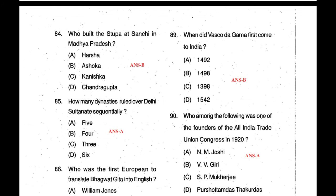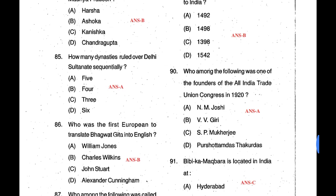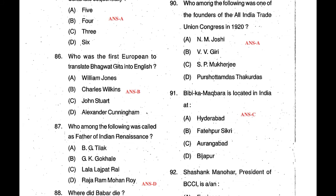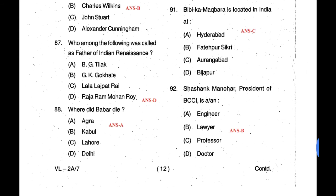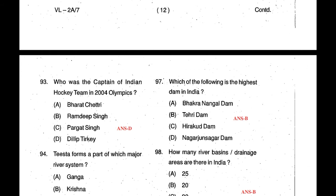Question 88: Where did Babur die? Babur died at Agra — correct answer is A. Question 89: When did Vasco da Gama come to India? Vasco da Gama came to India in 1498 — correct answer is B. He reached the Zamorin coast, in Calicut in Kerala, first reaching the western coast. Question 90: Who among the following was one of the founders of the All India Trade Union Congress in 1920? Correct answer is N.M. Joshi — answer is A. Question 91: Bibi Ka Maqbara is located in India at Aurangabad — correct answer is C. Question 92: Who was the president of BCCI in 2015? That is Shashank Manohar — he is a lawyer.